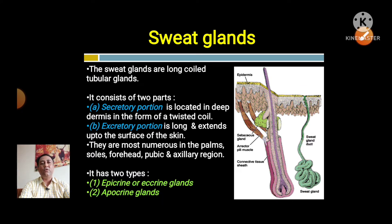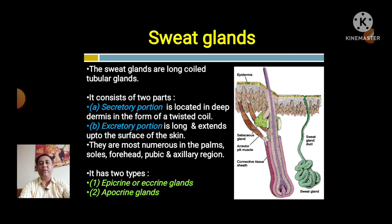Sweat glands are most numerous in the palm, soles, forehead, pubic, and axillary regions — the main sites of perspiration in the body. There are two types: eccrine and apocrine glands.